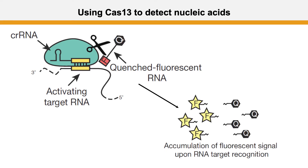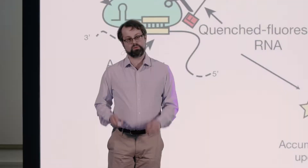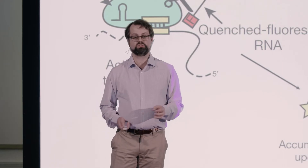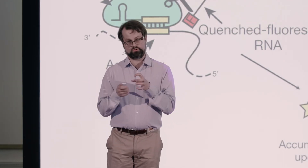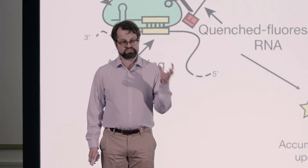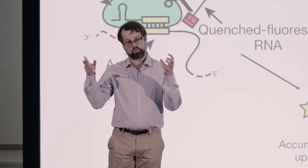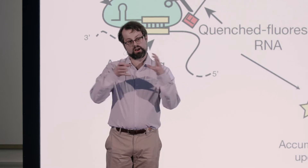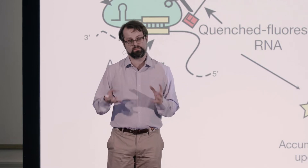The first step is Cas13 and the CRISPR RNA binding to the target molecule. That then activates the enzyme, which allows it to start cutting. With the help of a reporter molecule that contains a fluorescent group and a quencher that blocks the fluorescence of that molecule,